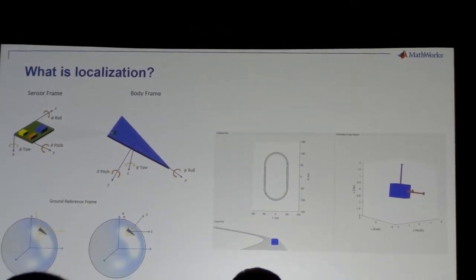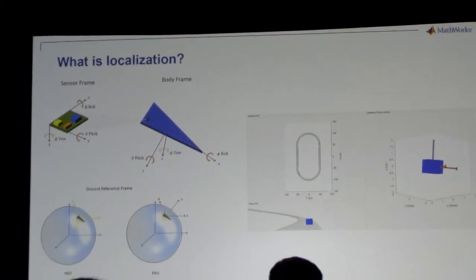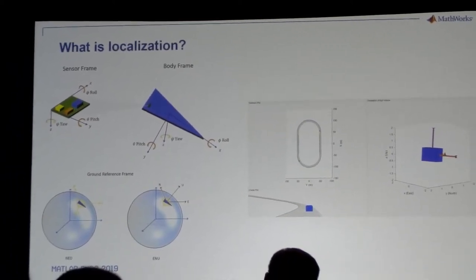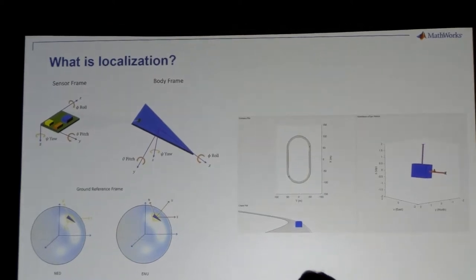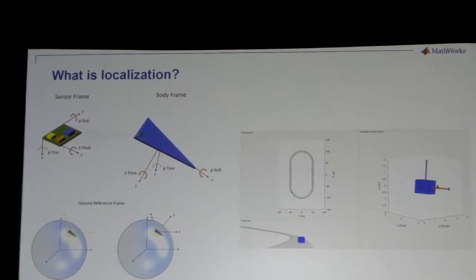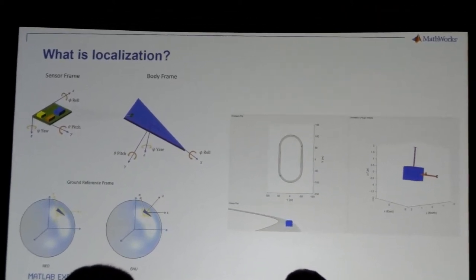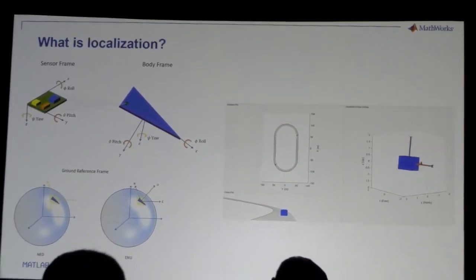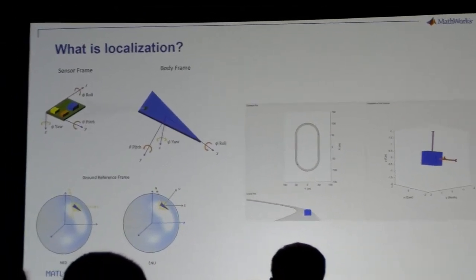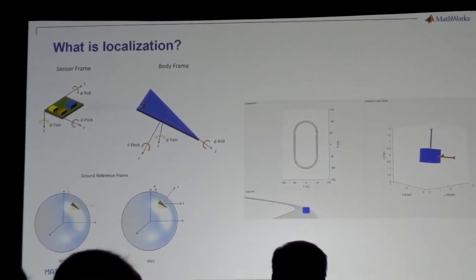Before we look at what's going on around the system, we want to look at what the system itself is doing. For localization, we think of three reference frames: the sensor frame — that is, the sensor orientation itself. That sensor, or sensors, can be mounted onto a platform, so the platform also has orientation. If this was a UAV, for example, the UAV might be traveling in some direction.